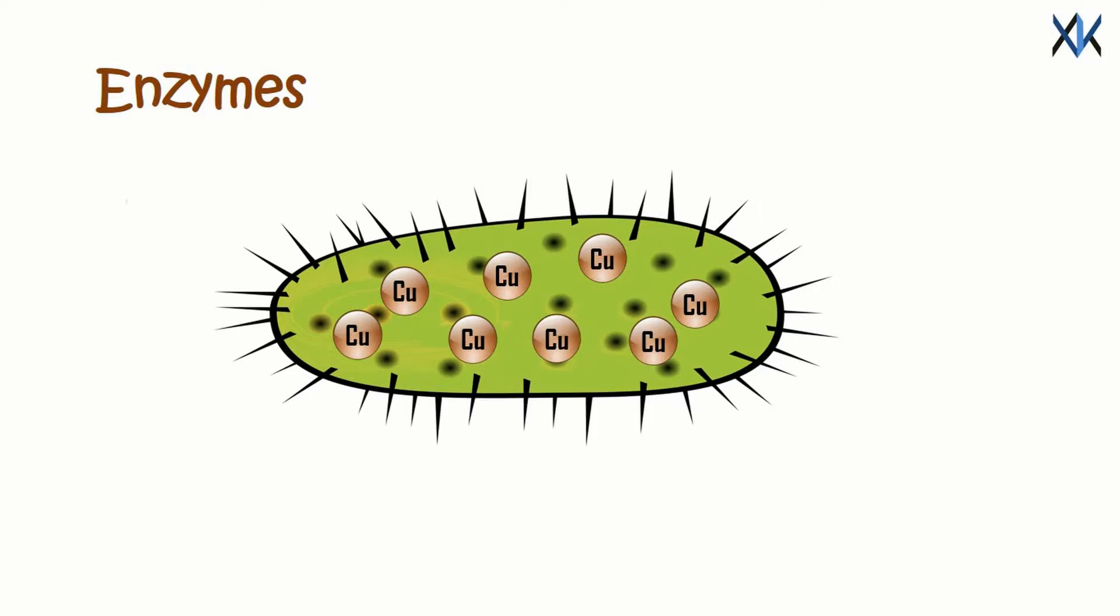When too much copper has accumulated inside the bacteria, it is normally pumped out by the enzyme called CopA. However, the presence of gold compounds suppresses the enzyme. Thus the toxic copper and gold compounds remain inside the cell. Copper and gold combined are actually more toxic than when they appear on their own.